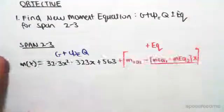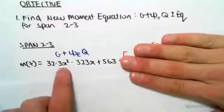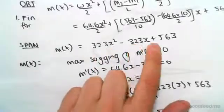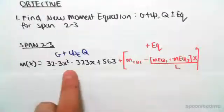Now this case G plus psi EQ, so this equation we've already found, we found this way back. So I'm just going to show it to you. It was 32.3x squared minus 323 plus 563. So that's the equation over there.